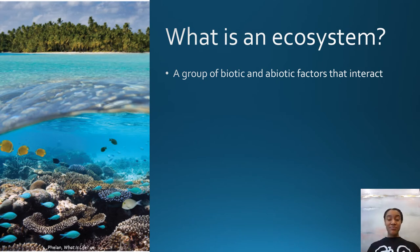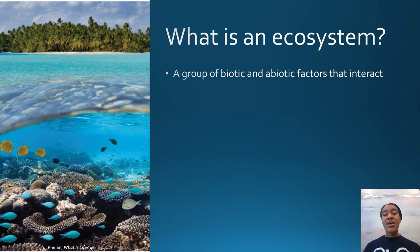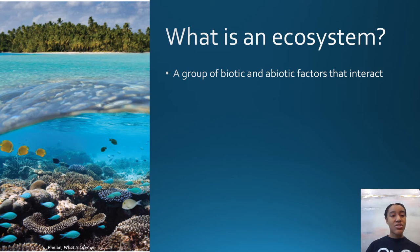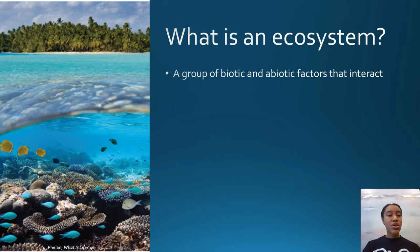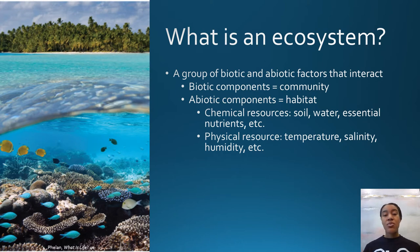Moving out even further from communities to an ecosystem: an ecosystem is a group of biotic and abiotic factors that interact. This image shows some of the biotic factors like trees, fish, and coral, while abiotic factors include temperature, water, elevation, and rocks. The biotic components in an ecosystem are called the community, which we just talked about, and the abiotic factor components are called its habitat.